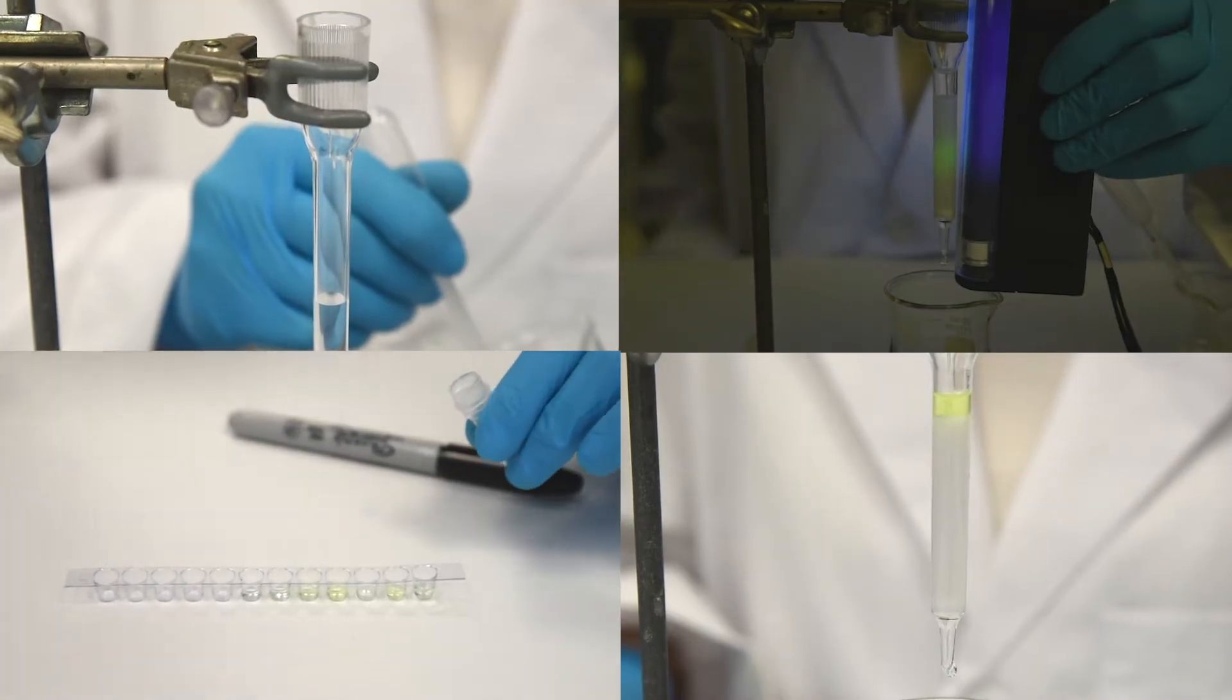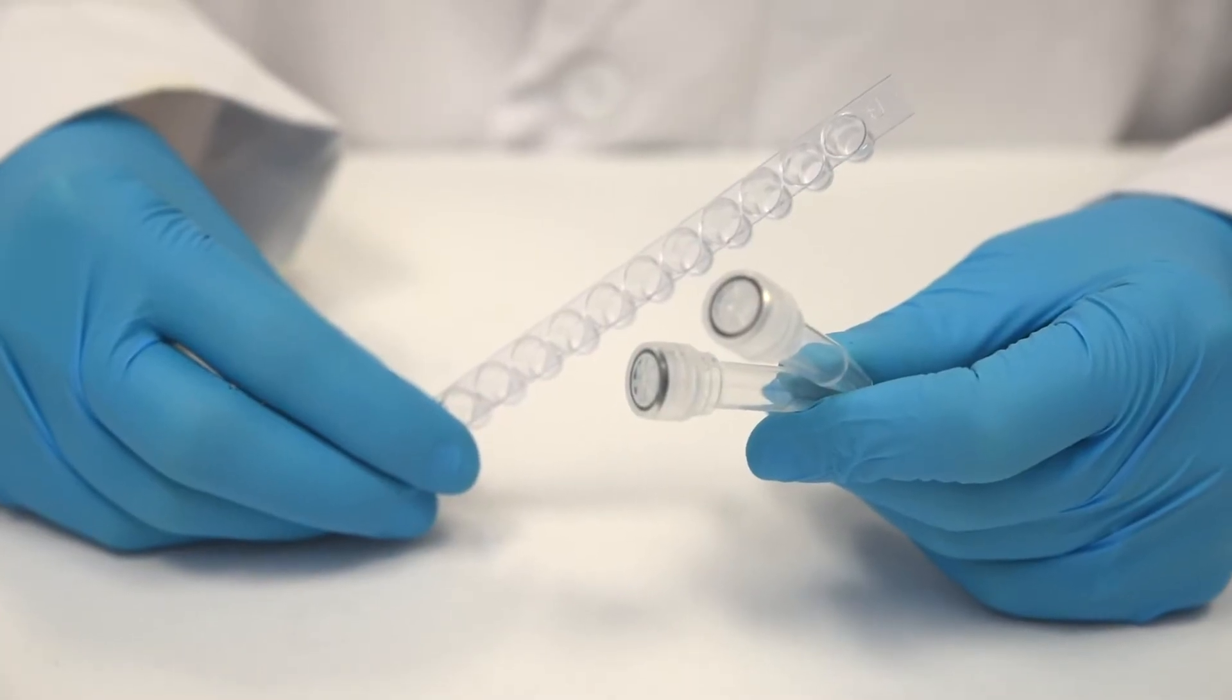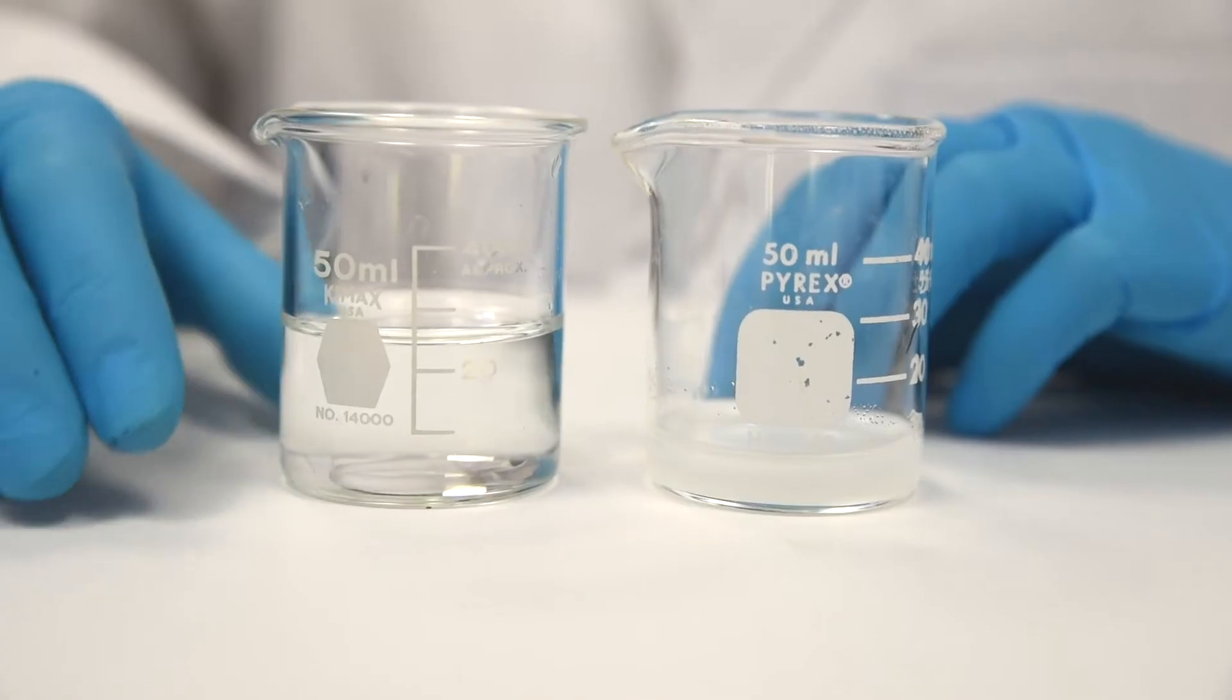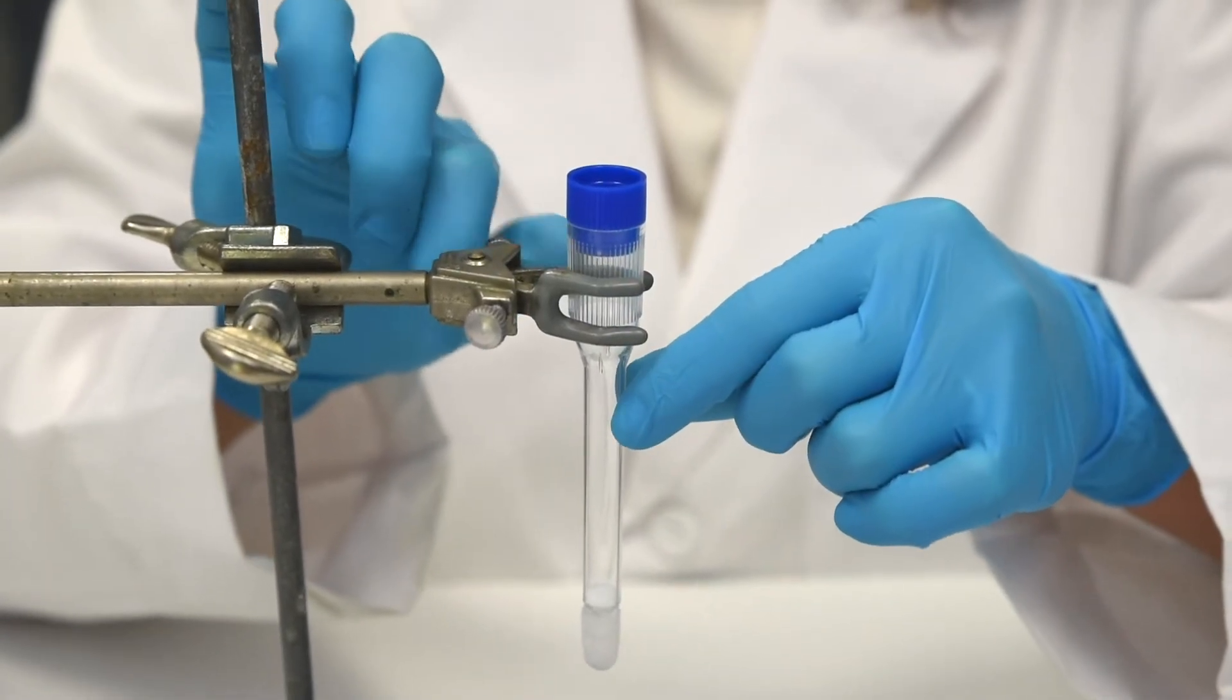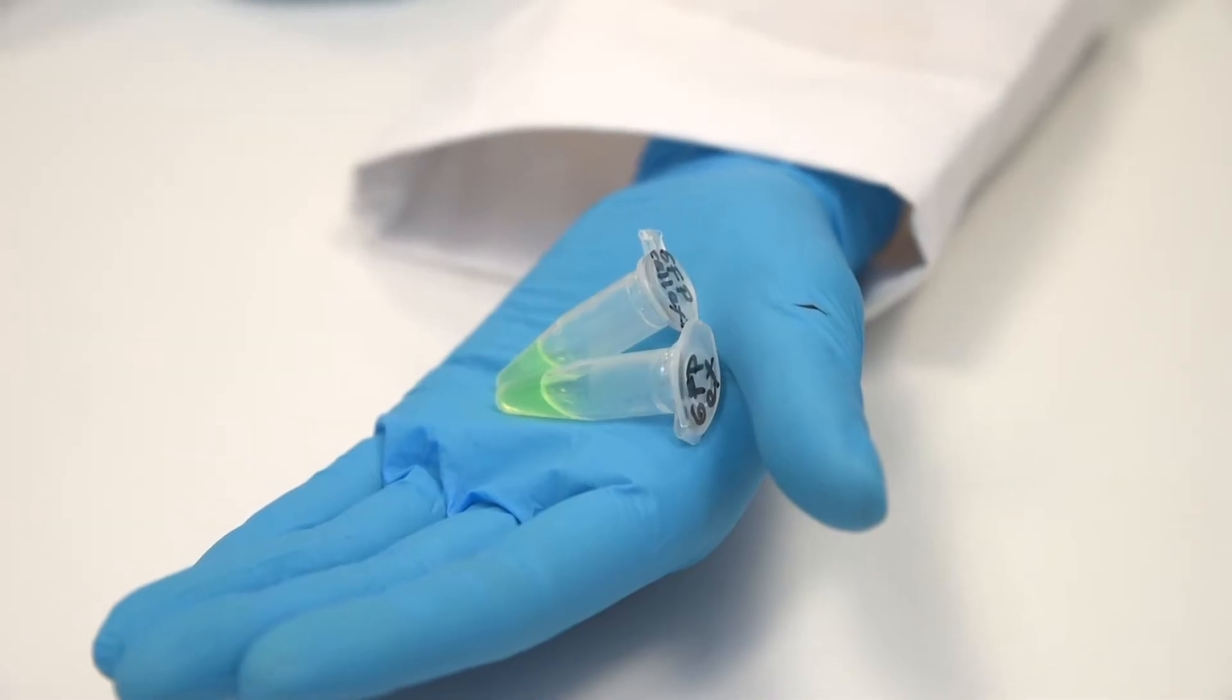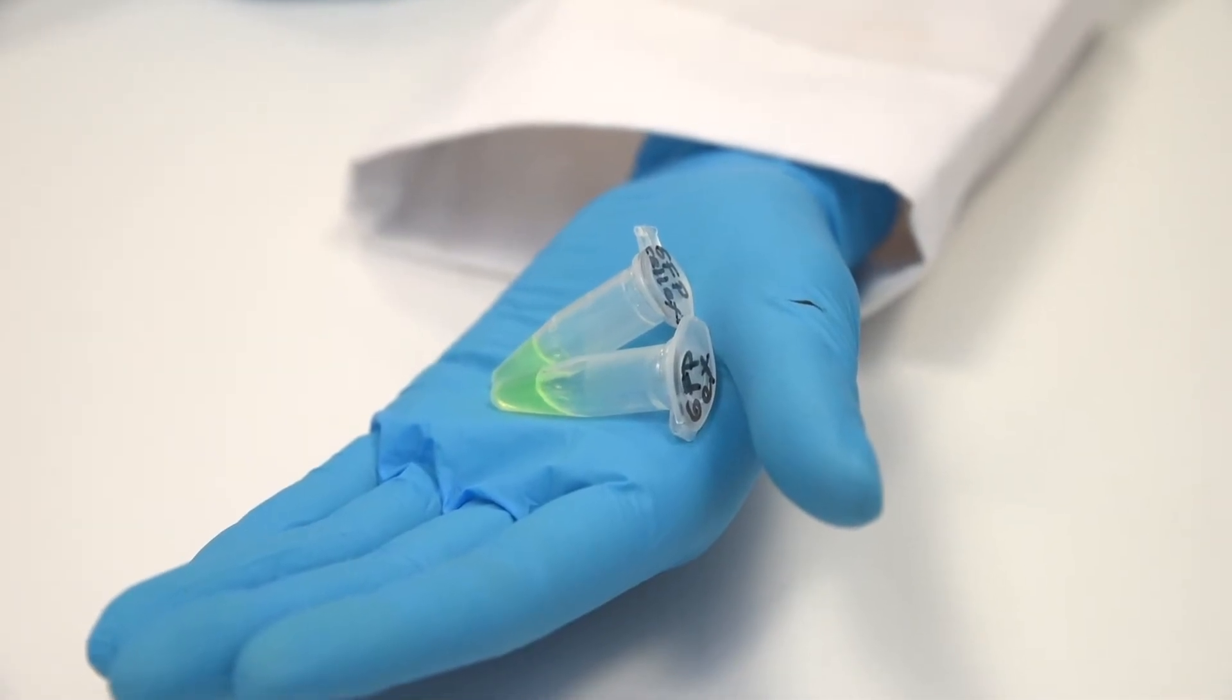For this module, you will need a microtiter plate, screw top microcentrifuge tubes, elution buffer, molecular sieve matrix, a ring stand and chromatography column, and GFP extract from Module 2 or control GFP extract.